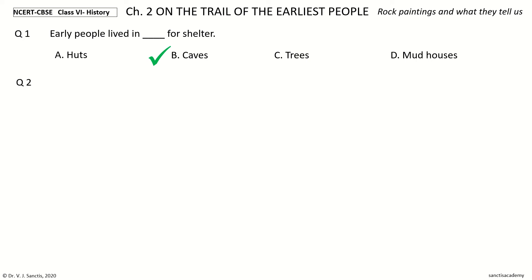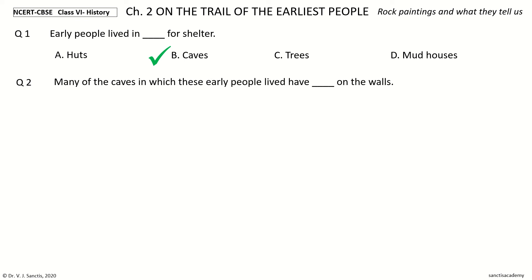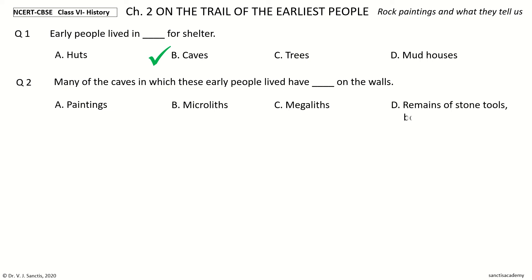Question 2. Many of the caves in which these early people lived have ___ on the walls. The options are: paintings, microliths, megaliths, remains of stone tools, bones and wood. Your time to choose. And the answer is paintings.